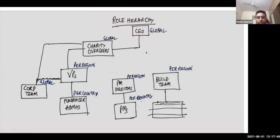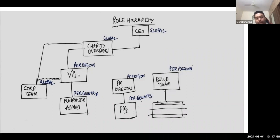Moving on to role hierarchy: we have a global CEO on top, then charity overseers which is also a global role. There is a corporate team which also works globally and rolls up to charity overseer so they can see all data accessible by the corporate team. We also have VPs, one per region, who also roll up to charity overseers. Under VP we have fundraiser admins at the country level, and then PM directors and PMs. I'm also assuming they will roll up to the charity overseers team and then to the CEO.